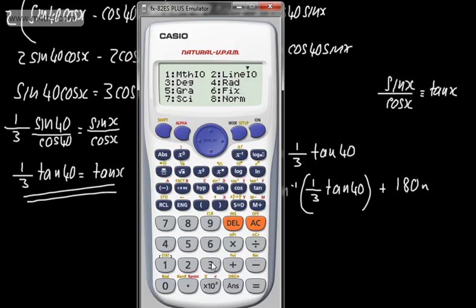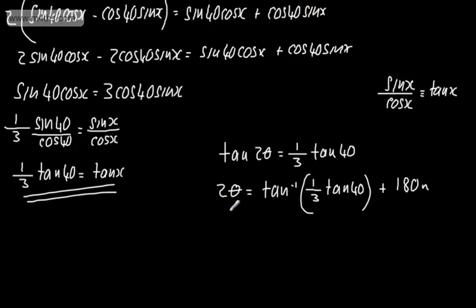Let's find the principal value. Shift mode 3, in degrees mode. We want the inverse tan of tan(40)/3, and we'll write that in. That's going to give me 15.626 and so on. So we can write that 2θ equals 15.6... plus multiples of 180.